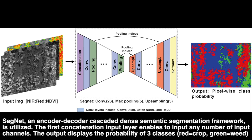The modifications we made are two-fold. First, the frequency of appearance for each class is adapted based on our training dataset for better class balancing. Second, we add an input layer to concatenate any number of input channels. The network output on the right shows the pixel-wise class probability in different colors.